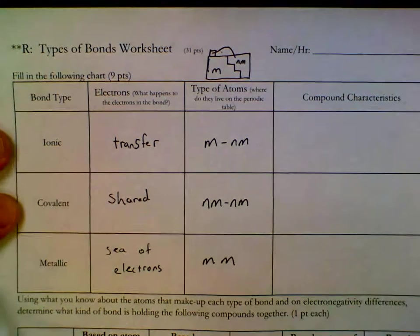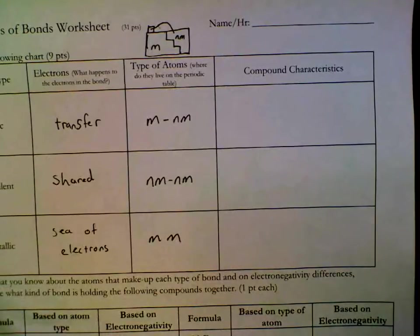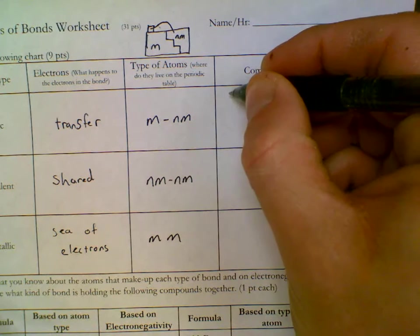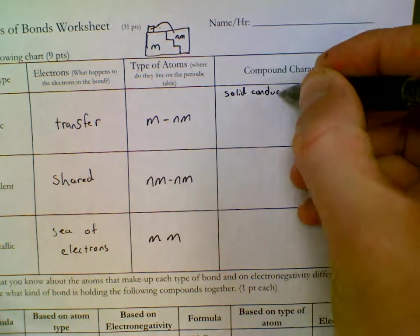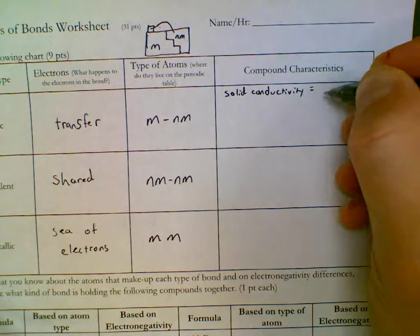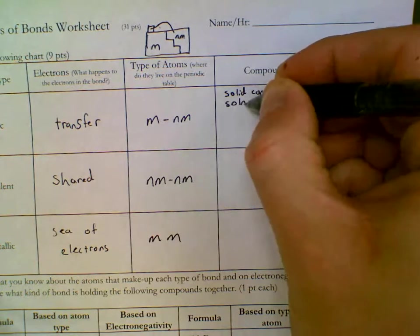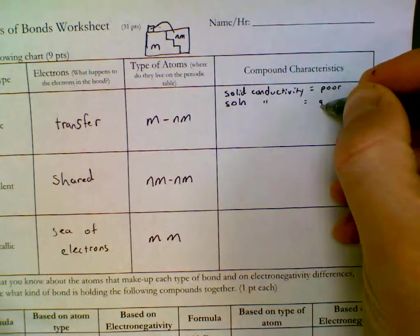So then compound characteristics, we have three basic groupings here. We had conductivity, solubility, and then also melting point. So ionic conductivity in a solid is poor. And again, this is coming off of the notes that we took in class. But solution, S-O-L-N is an abbreviation for solution, conductivity is good.